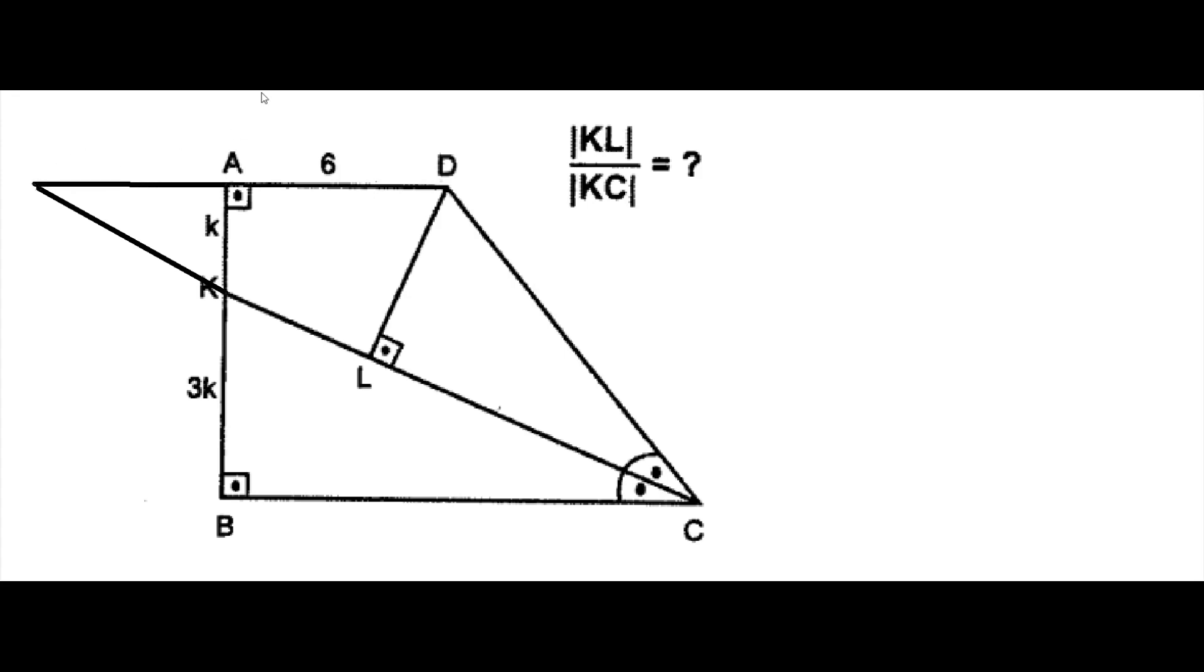And it's visible that if these angles will be alpha and alpha, this angle will be also alpha. Which means that this line segment will be at the same time height and median and bisector. Because, if we will say that this is F, the FDC triangle is an isosceles triangle.